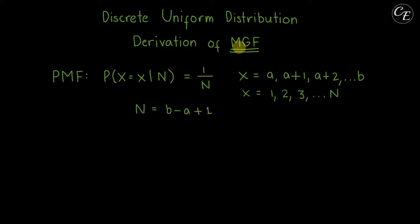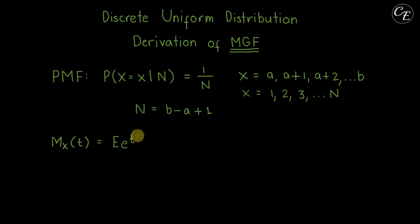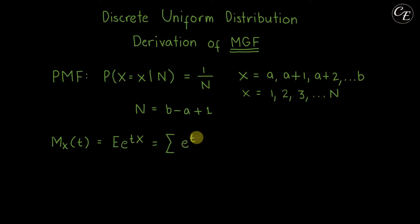Now let's start with the derivation of the moment generating function. The moment generating function has the notation M of t, and in general it is equal to the expectation of e raised to tx, where x is the random variable. For a discrete random variable, it is equal to the summation of e raised to tx times the probability mass function, which for this distribution is one over n.